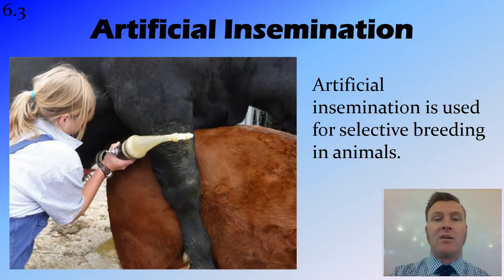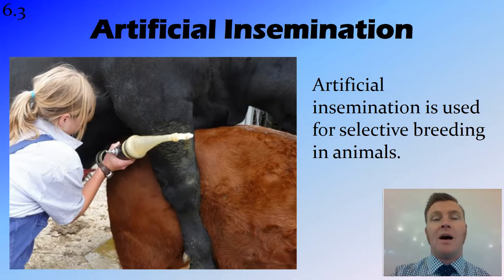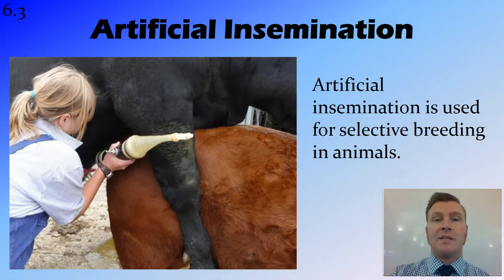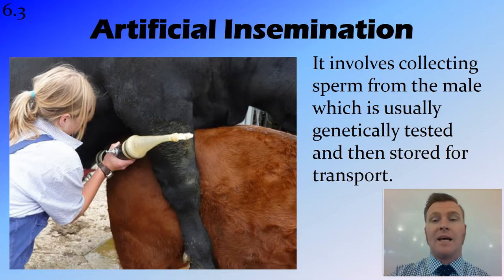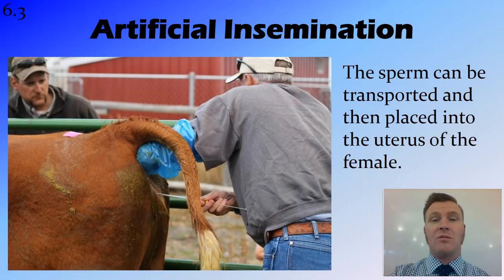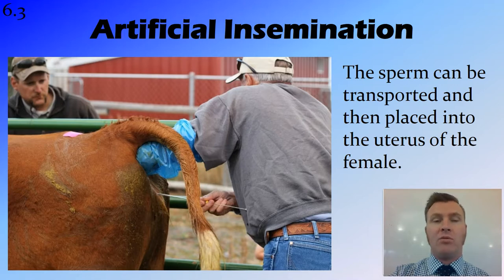In animals, the technology we have is artificial insemination, which is also used for selective breeding. With selective breeding, you get the bull you like and the cow you like and put them in a pen together to breed. Artificial insemination means you don't actually have to do that — you can harvest the bull's sperm or semen and ship it over a long distance to cows all around the country or the world. The sperm is collected from the male, genetically tested to make sure it's good, then stored for transport, and placed into the uterus of a female. This accelerates the control we have over the gene pool of these particular animals.